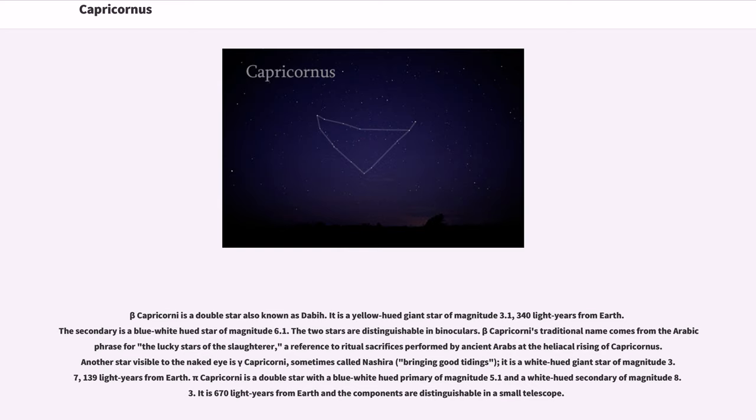Another star visible to the naked eye is Gamma Capricorni, sometimes called Nashira, bringing good tidings. It is a white-hued giant star of magnitude 3.7, 139 light-years from Earth.